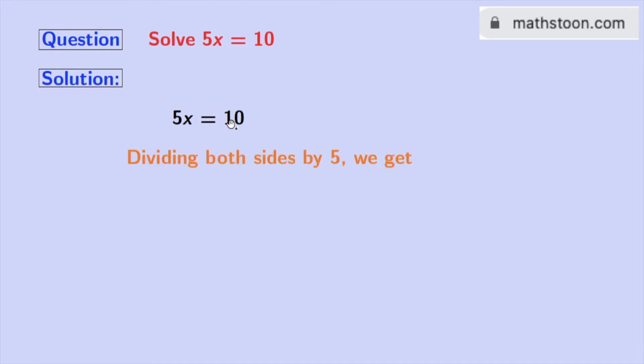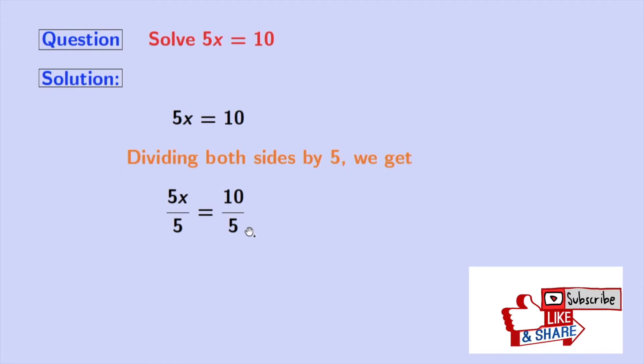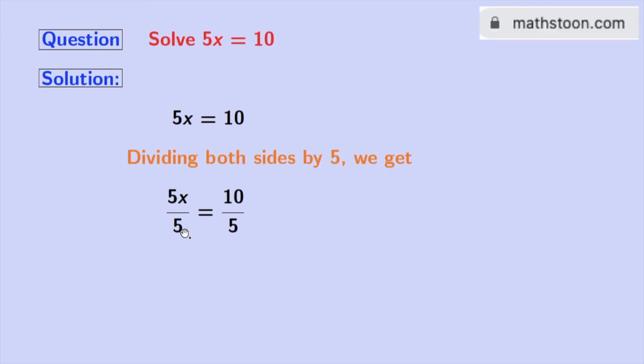Doing so we get 5x by 5 is equal to 10 by 5. Look, 5 gets cancelled in the left-hand side and we are left with x. And in the right-hand side 10 by 5 is 2. So we are left with 2.